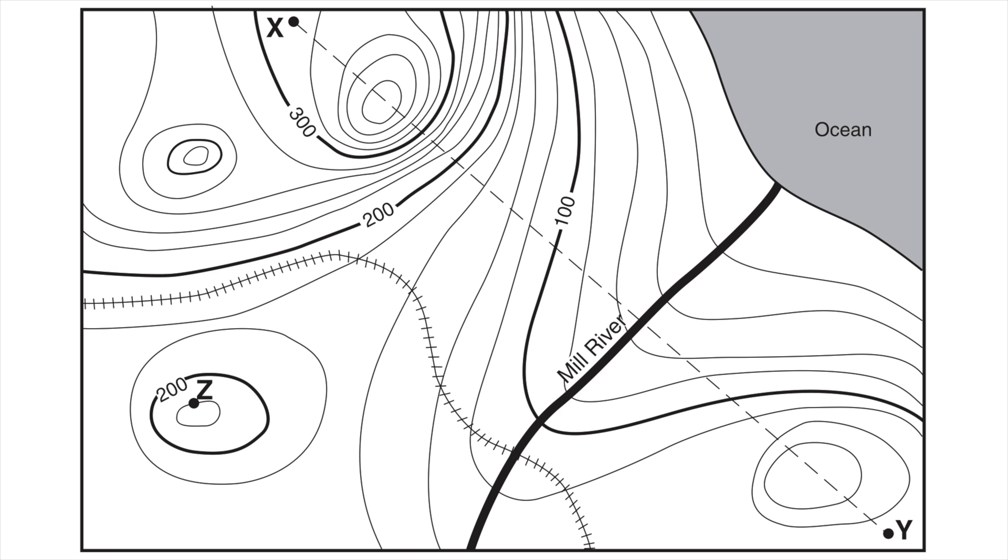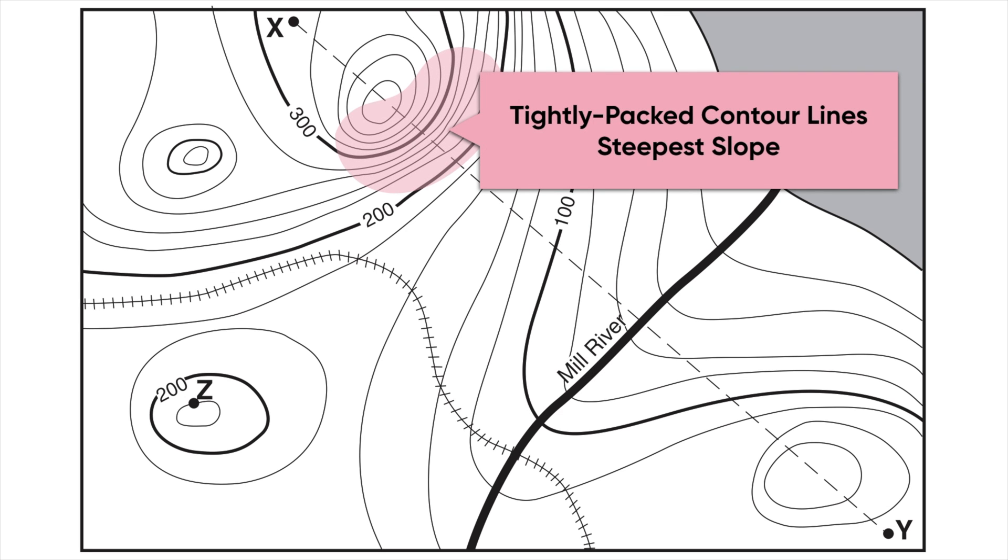So in this particular map, an area like, say, this region shown in pink, those contour lines are really tightly packed together. And so that's going to represent an area that has a steep slope. It's got a big change in elevation, but over a short distance.